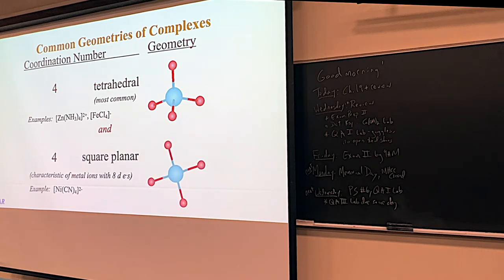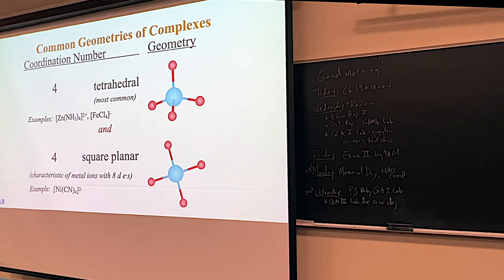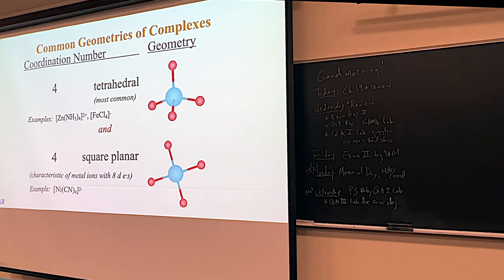Oftentimes these are going to be tetrahedral geometries. However, you can have lone pairs around it, and if you have lone pairs, sometimes they take up positions on the top and the bottom. So it's also not too uncommon to have square planar coordination numbers of four. Here's a nickel — that would be the blue atom — and there are four cyanides around it. There are ways to tell if the complex is going to be square planar or tetrahedral, but we won't go into that in this class. For four, tetrahedral is the most common, but there are some square planars out there.